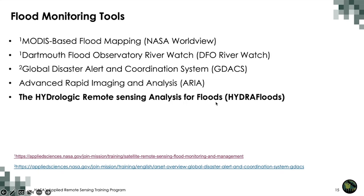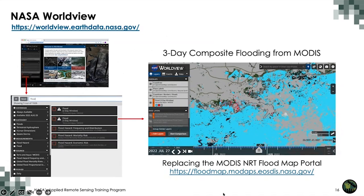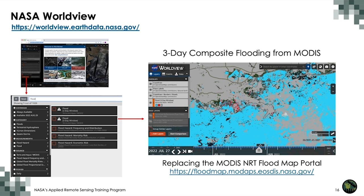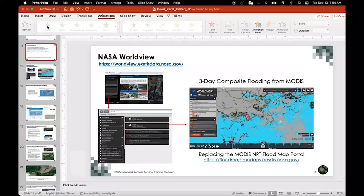For MODIS-based flood mapping, the earlier website is no longer working. All near real-time or current flooding data are now available from NASA Worldview. If you want to look at past flooding events from 2002 to about 2021 you can still use the old site, but there is a better visualization in NASA Worldview. MODIS uses optical reflectances to detect water when it comes over a dry surface — that change is detected and that's how flood is mapped.